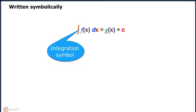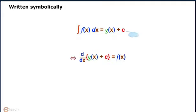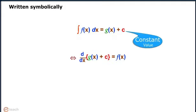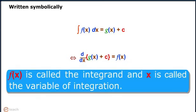That can be written as d/dx of [g(x) + c] equals f(x). Note that here c is a constant value. f(x) is called the integrand and x is called the variable of integration.